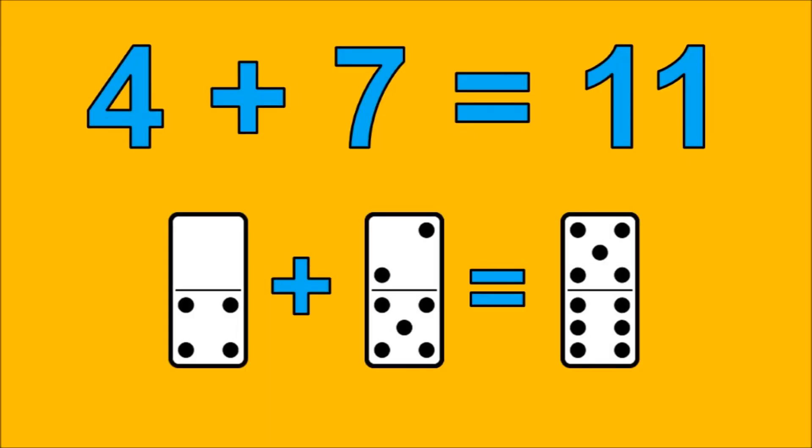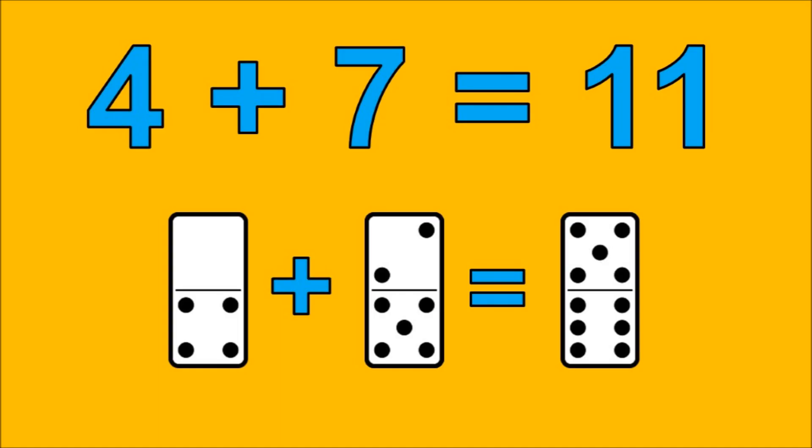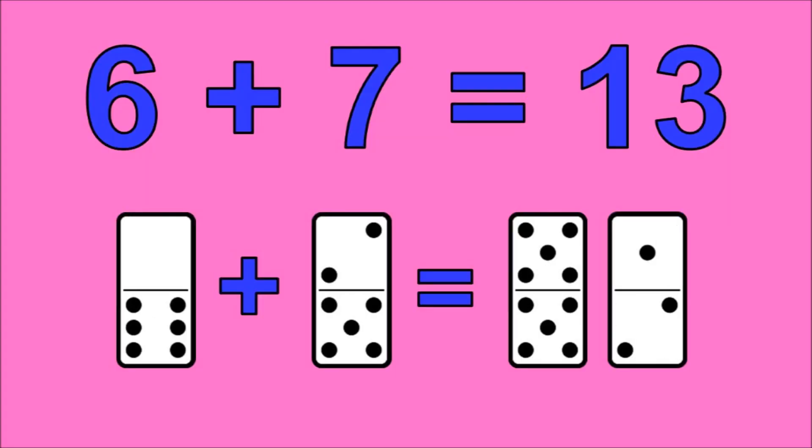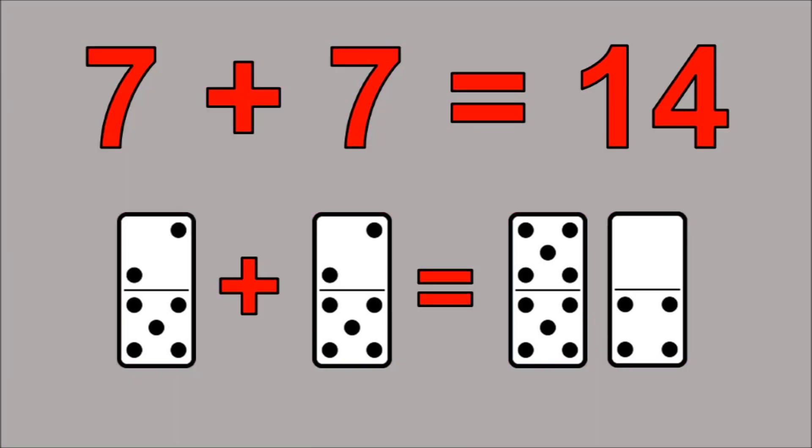4 plus 7 is 11, 5 plus 7 is 12, 6 plus 7 is 13, 7 plus 7 is 14.